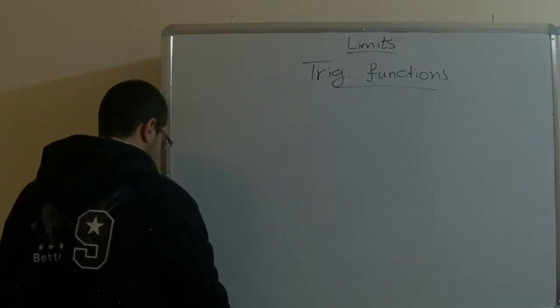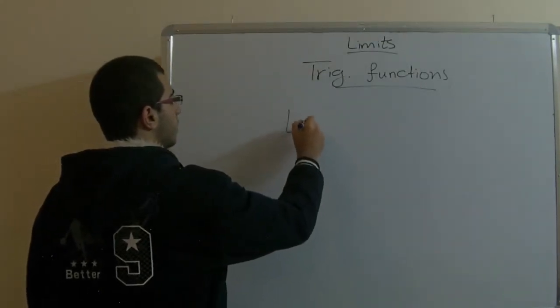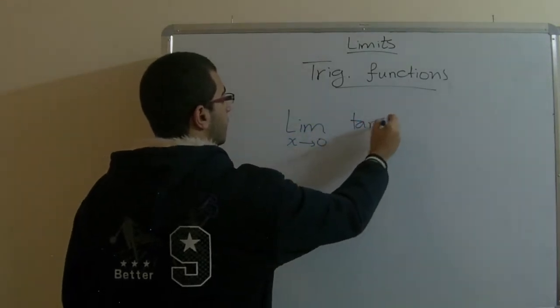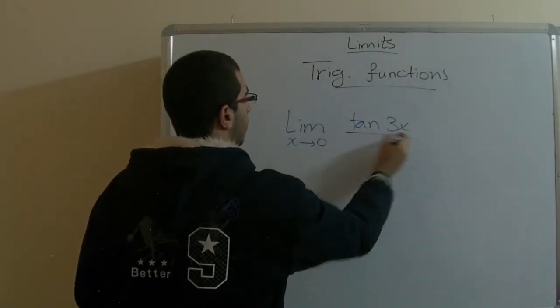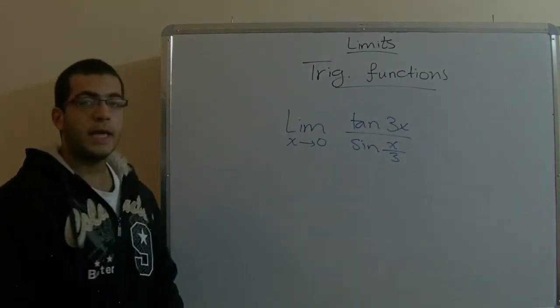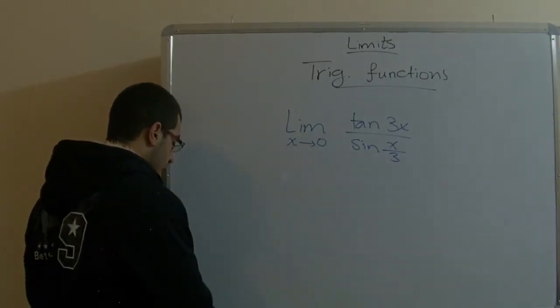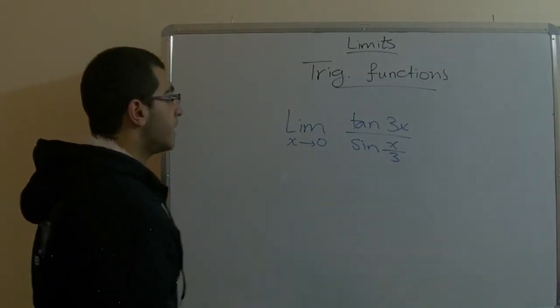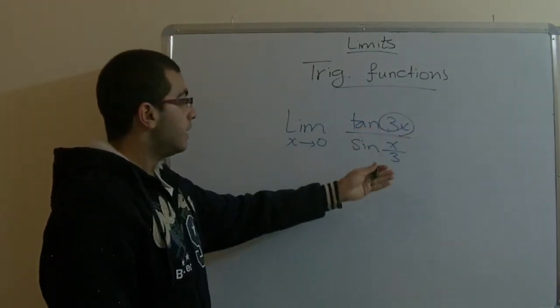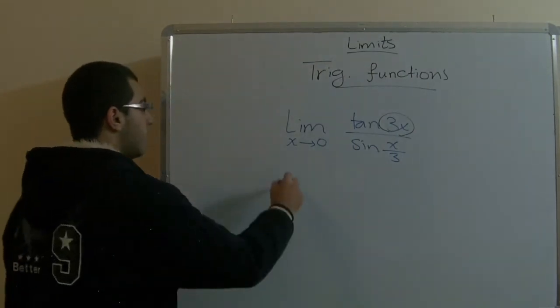And let's begin with something like this. The limit of x approaching zero, then 3x over sine x over 3. Actually, here the x over 3 is not confusing, because as here we got 3x, the coefficient of x here is 3. And here also the coefficient of x is 1 over 3, so we can write it this way.